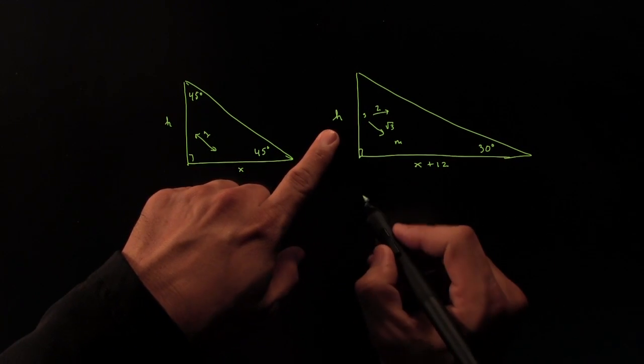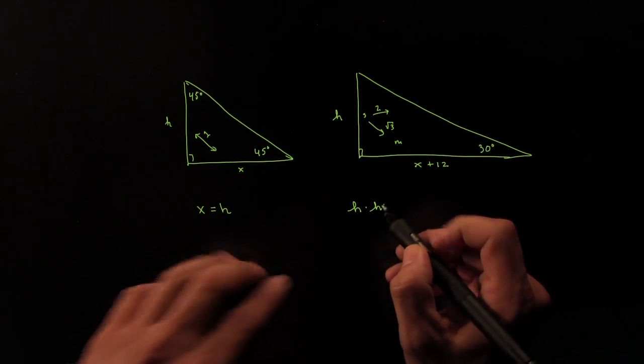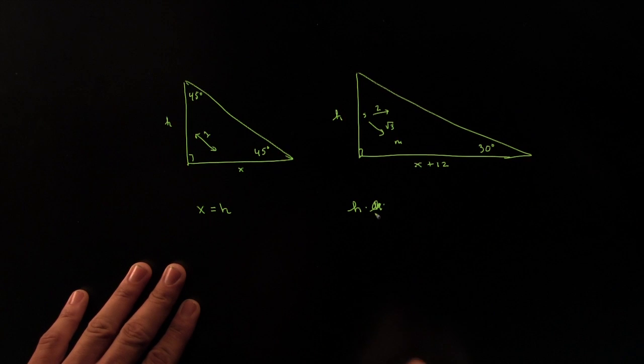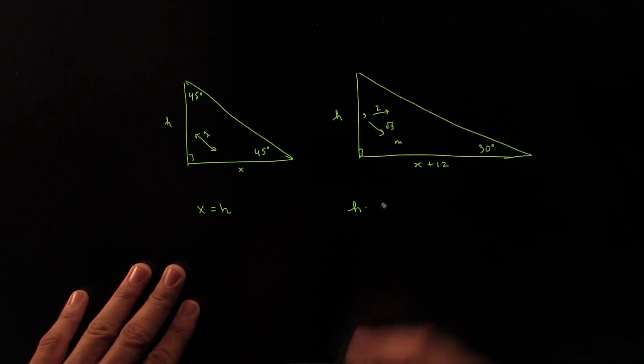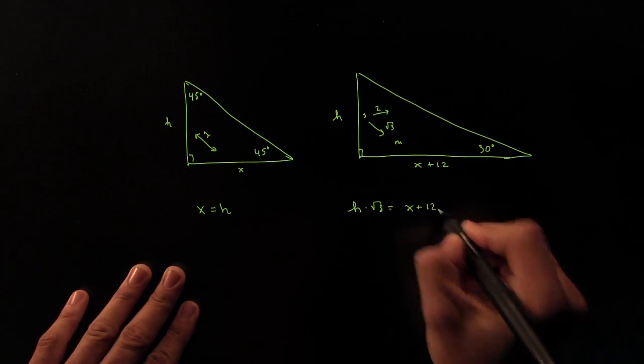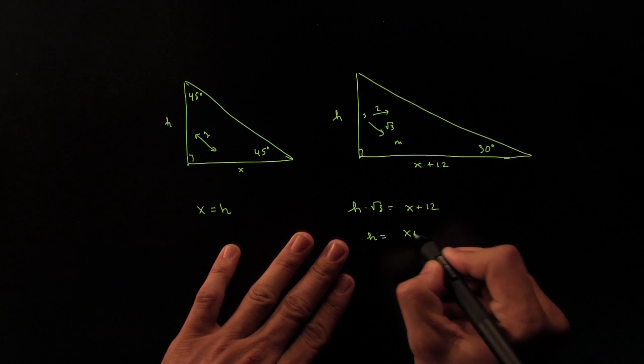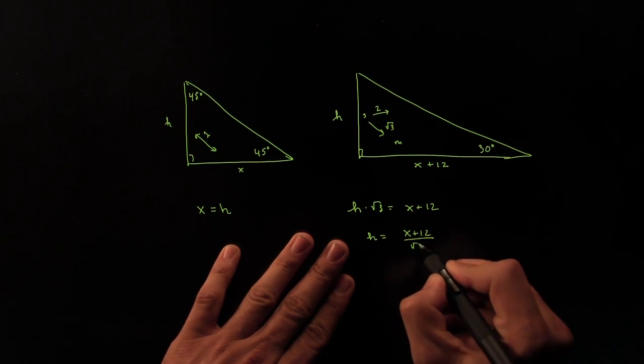So that tells us that H times the square root of 3 would give us X plus 12, or said differently, H is equal to X plus 12 divided by the square root of 3.